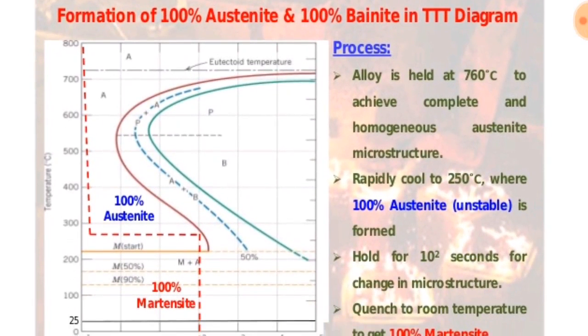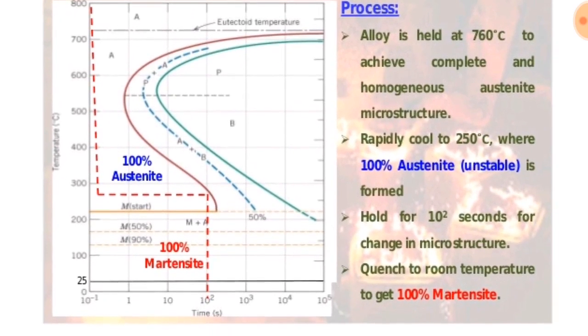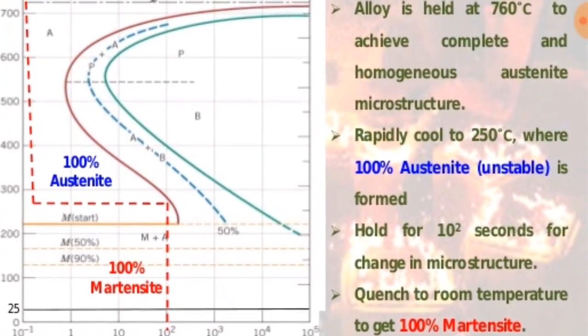Process: The alloy is held at 760 degrees Celsius to achieve complete and homogenized austenite microstructure. Rapidly cool to 250 degrees Celsius where 100% austenite, which is unstable, is formed.